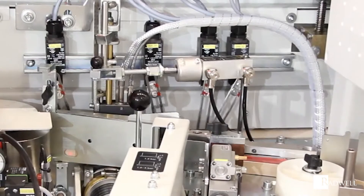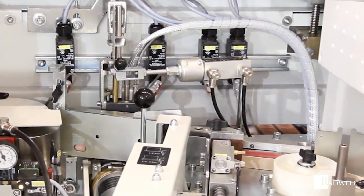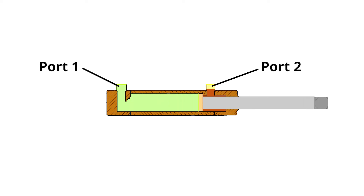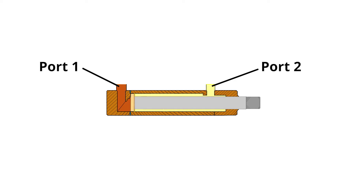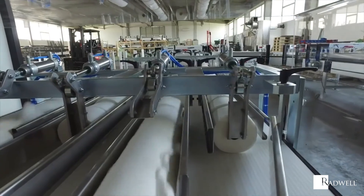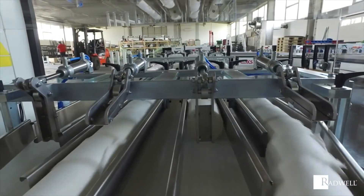A double acting cylinder's working principle is to transfer force in two directions to provide a back-and-forth motion. Double acting cylinders have a port on each side of the cylinder. A pressurized force enters the port at one end to push the piston forward, then pressurized force enters the second port to retract the piston back. Double acting cylinders are mostly used for applications to open and close or pick and place.